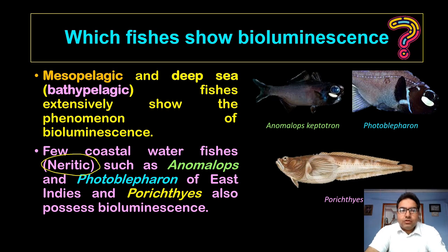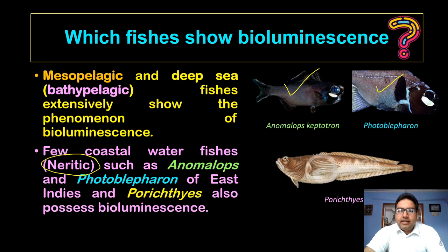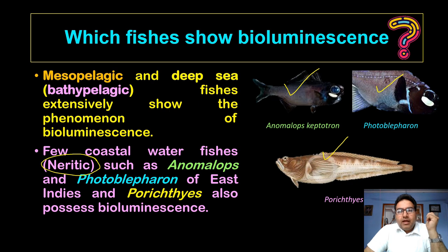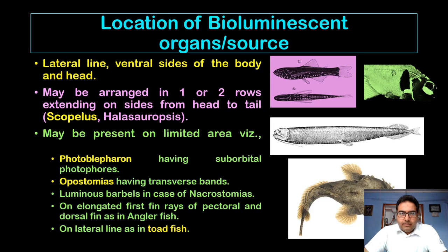Coastal water examples include Anomalops, which shows a certain intensity of bioluminescence, Photoblepharon, found in the East Indies, and Pricties, which also show bioluminescence. It is mostly the bathypelagic but some mesopelagic fishes show it as well. Importantly, bioluminescence has not yet been recorded in freshwater fishes.